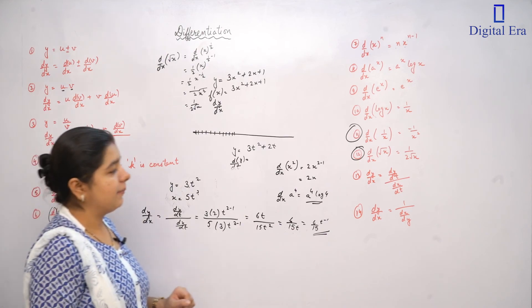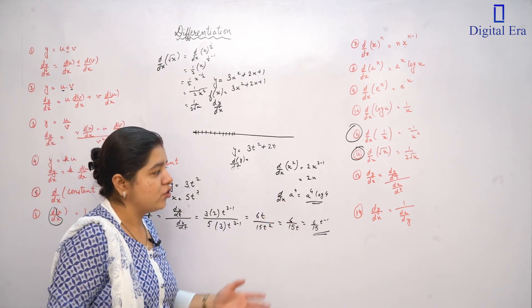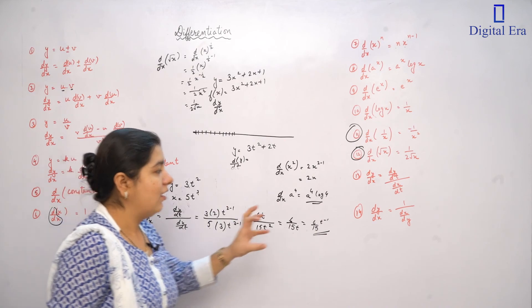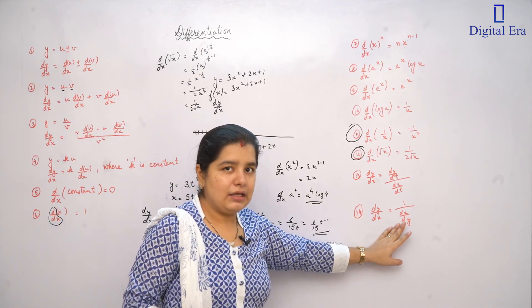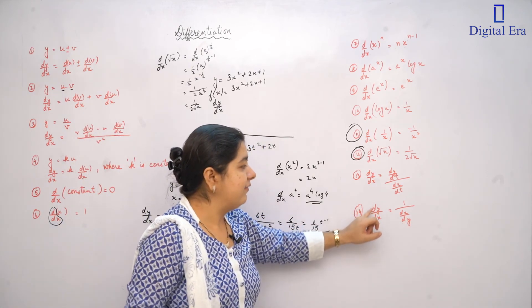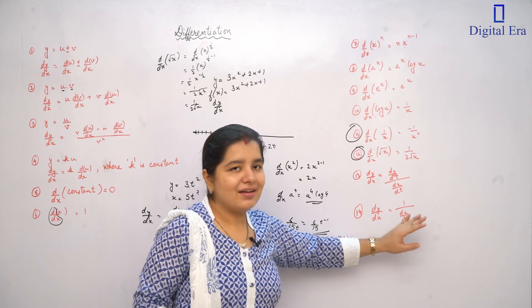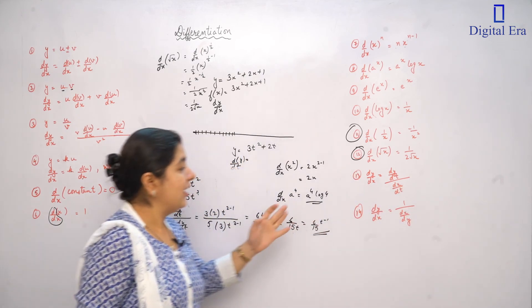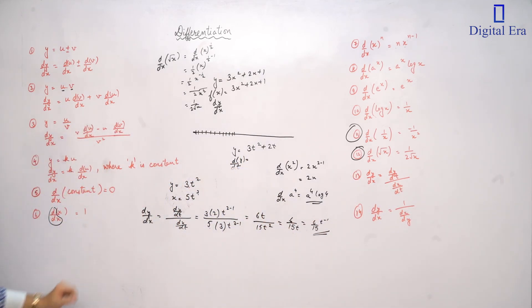Next, and the last formula: dy/dx is equal to 1 over dx/dy. If we have the value of dx/dy, we can find dy/dx by simply taking the reciprocal. So these are our basic formulas for differentiation.